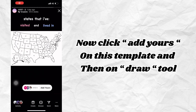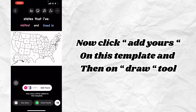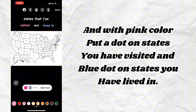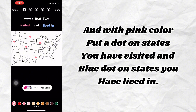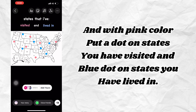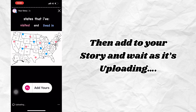Now click 'Add Yours' on this template, then on the draw tool. With pink color, put a dot on states you have visited, and a blue dot on states you have lived in. Then add to your story and wait as it's uploading.